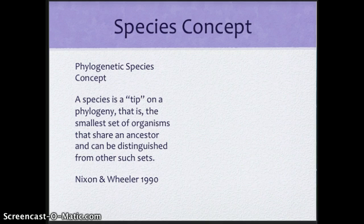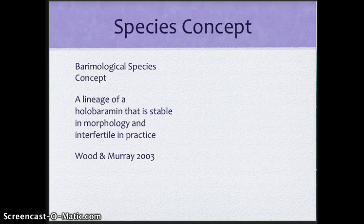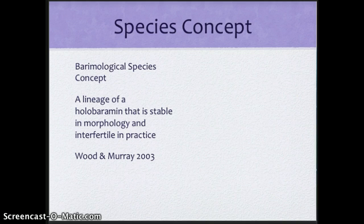Now, there is one more species concept out there. It's not widely accepted. Why is it widely accepted? Because it goes back to the whole idea of species as distinguished by Adam. And we call it the baraminological species concept. And this concept, fairly new, takes a different approach to things. It says that a species is a lineage of holobaramins. And we're going to look at what a holobaramin is in the next class. That's stable in morphology and interfertile in practice.